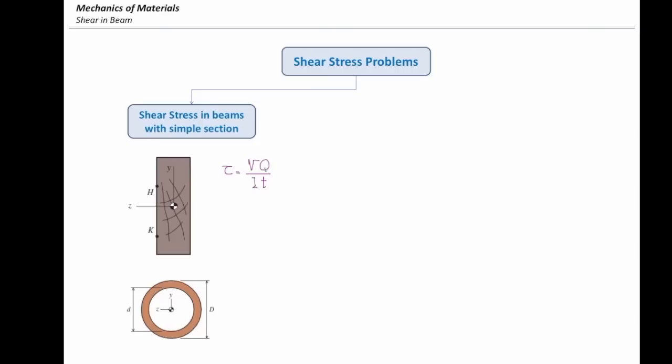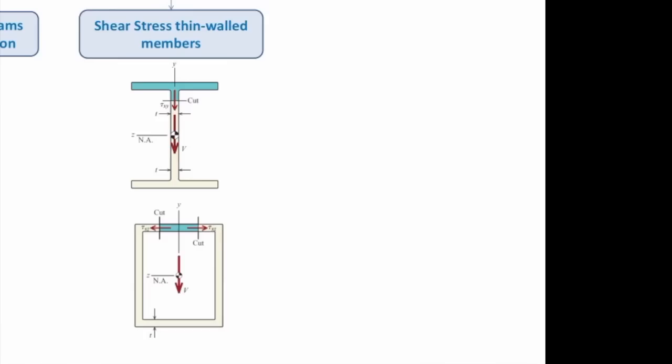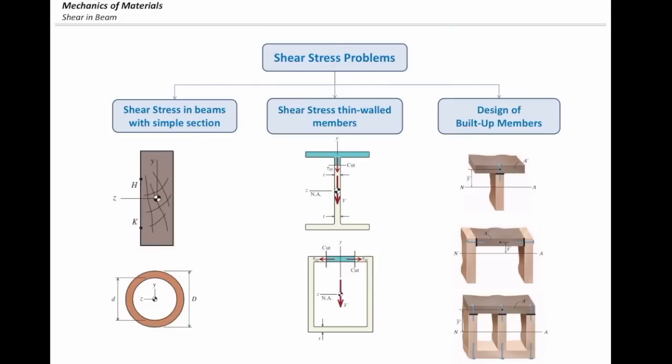The topic I want to focus on is thin-walled elements. Thin-walled elements are those elements which have thin thickness compared to their height and width. They might be open thin-walled elements, as we see on top, or closed thin-walled elements, as we see on the bottom. We will cover how to calculate shear stress and shear flow in this kind of sections, using the same equation as before, which we will cover on Thursday.